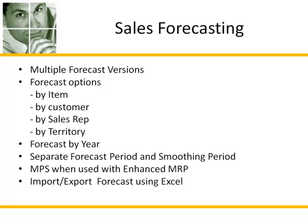Functions within the module include the ability to maintain multiple forecast versions, enter forecast by item, customer, sales rep, and territory, maintain forecast by year, define different forecast periods and smoothing periods for MRP planning, create a master production schedule using the forecast and enhanced MRP, import and export forecast data using Excel, and view prior year's forecast and actual sales history.